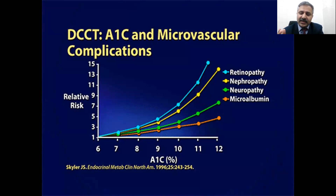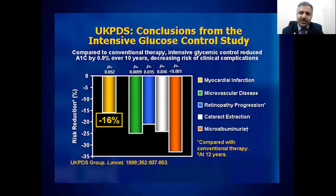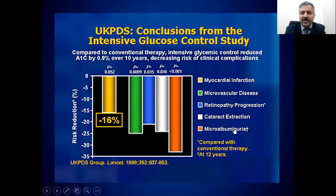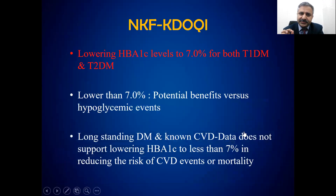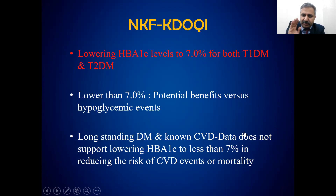Say you have a 50-year-old male with type 2 diabetes. The most significant thing is good glycemic control because that can decrease the risk of retinopathy, nephropathy, neuropathy, and microalbuminuria — meaning you can actually delay the onset of albuminuria and hence nephropathy. The UKPDS data showed that if you decrease HbA1c by 0.9% over 10 years, there is a significant risk reduction — more than 30% decrease in risk of microalbuminuria. KDOQI recommends targeting HbA1c at 7% in both type 1 and type 2 diabetics. Lowering below that has no additional benefit and can cause hypoglycemia.